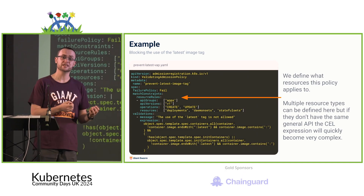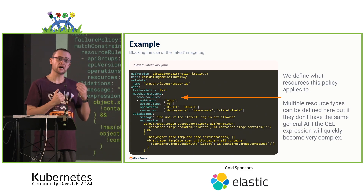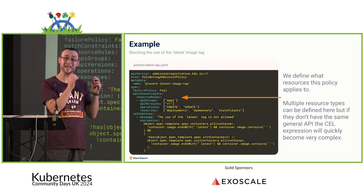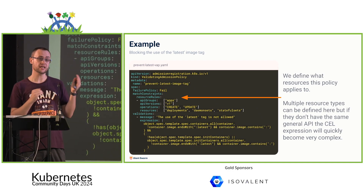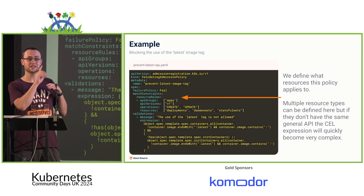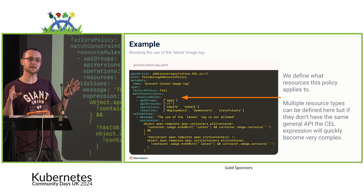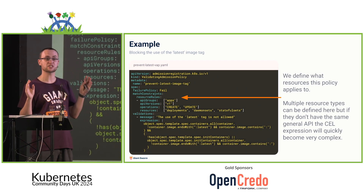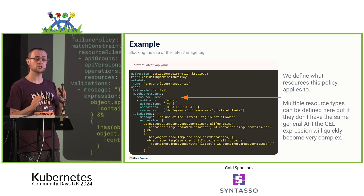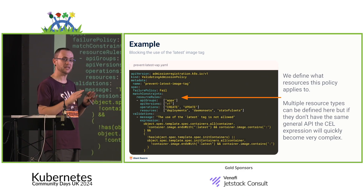One thing to be mindful of: when creating these policies, you want the spec of the targeted resources to be as similar to each other as possible, otherwise expressions get very complicated. Deployments, daemonsets, and stateful sets all have spec.template.containers in their CRD, which makes it easy to have the same expression for all of them. If you have different schemas for your target resources, I recommend separate policies for each to keep expressions simpler.